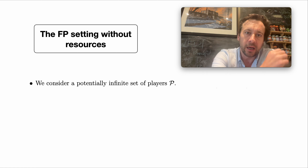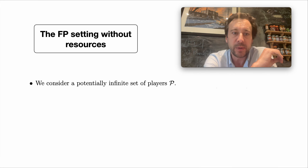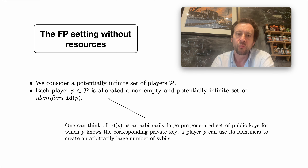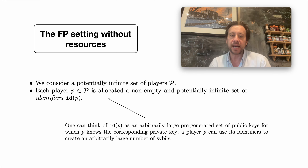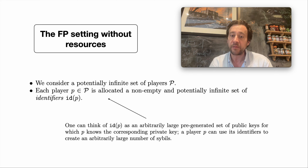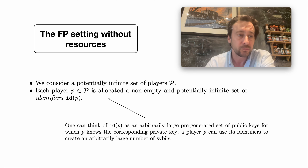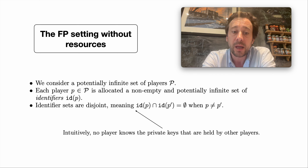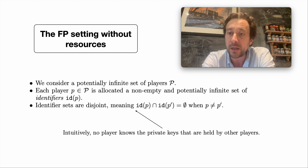In the fully permissionless setting without resource restrictions yet: because of the potentially infinite set of players P, each player in that set is allocated a non-empty and potentially infinite set of identifiers. You can think of those identifiers as an arbitrarily large pre-generated set of public keys for which the player knows the corresponding private key. A player can use the identifiers to create an arbitrarily large number of sybils.